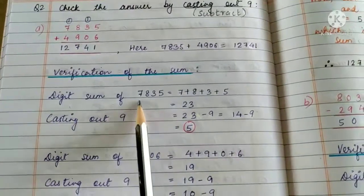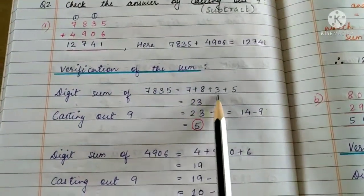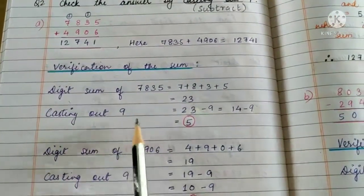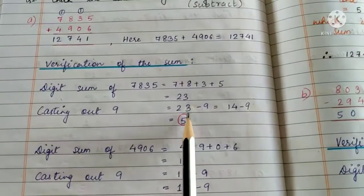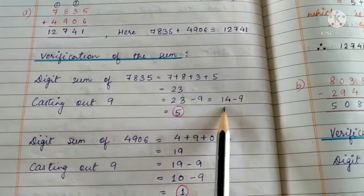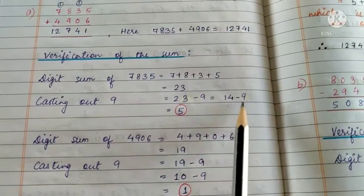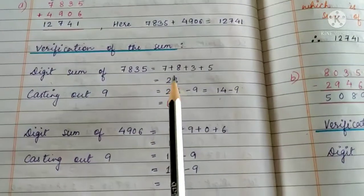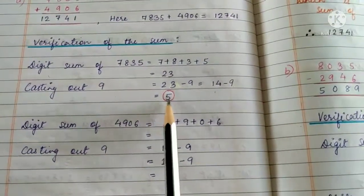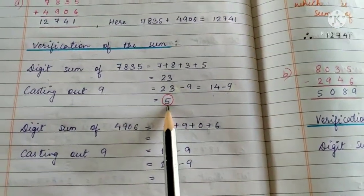Digit sum of 7835 is 7 + 8 + 3 + 5 = 23. Now casting out 9, at this stage we will subtract 9 from the digit sum: 23 - 9 = 14. Again, we keep on subtracting 9 till we get a number which is smaller than 9. Hum is digit sum se 9 ko tab tak minus karte rehenge jab tak wo sum 9 se chota na ho. Now 14 - 9 = 5. We cannot subtract 9 from this number again.